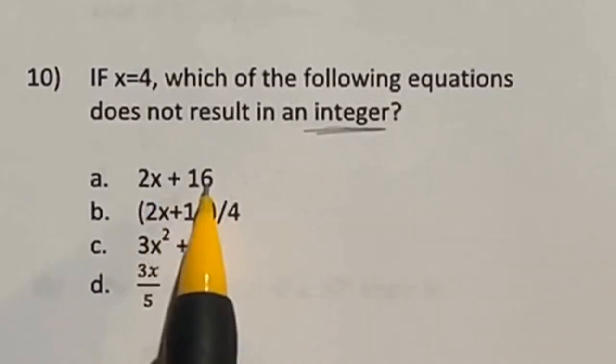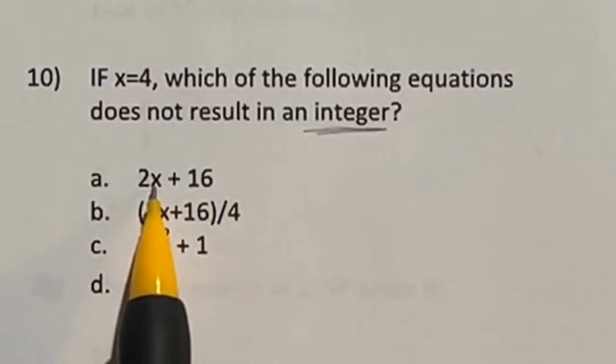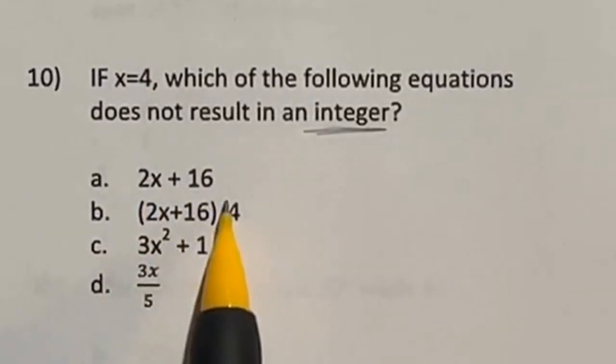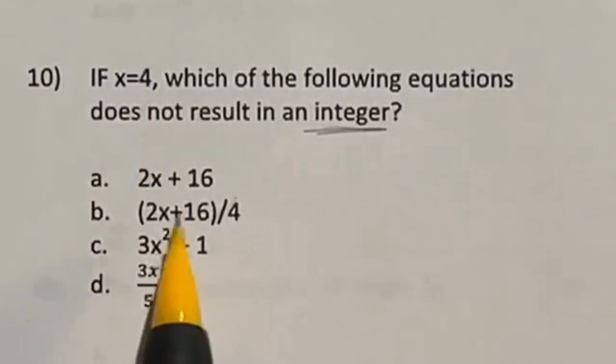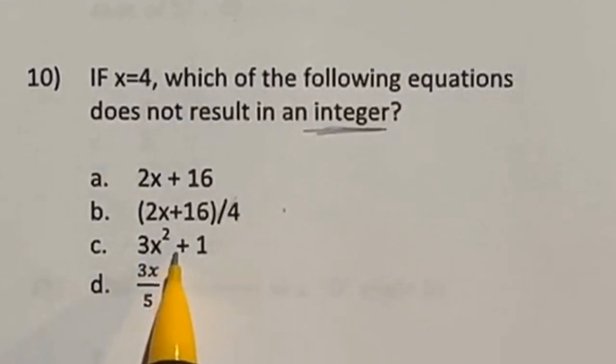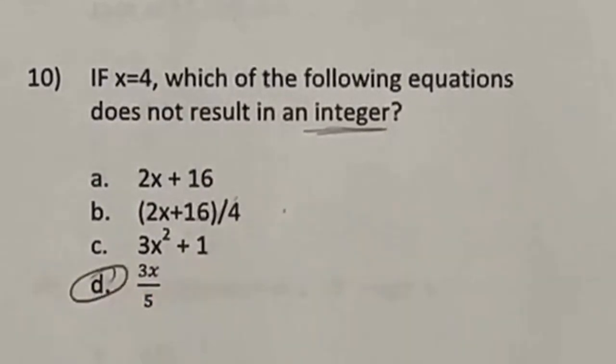2X plus 16, that's clearly two times four is going to be eight plus 16. That's going to give us a whole number. In this case, dividing by four could give us an option of not being a whole number. But when we look at this, two times four and 16 is divisible by four. So if this is divisible by four and so is this, then that's going to give us a whole number. So that's not it. In this case, we're not dividing anything. So there's no way we're going to get brought down to a decimal. In here, we have 3X divided by five. Three times four is 12. 12 divided by five is not a whole number. So our answer is D.